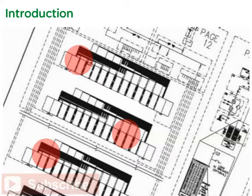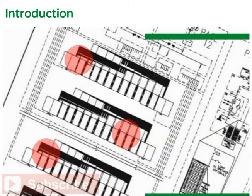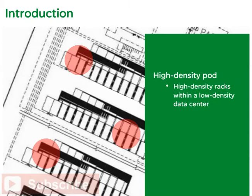Data center operators and IT executives are often uncertain about the capability of their existing data center and whether a new data center must be built to support higher rack densities. Fortunately, a simple solution exists that allows for the rapid deployment of high-density racks within a traditional low-density data center. A high-density pod allows data center managers to support a mixed-density data center environment for a fraction of the cost of building a new data center.